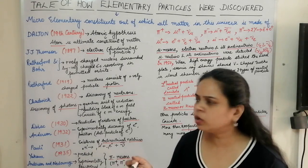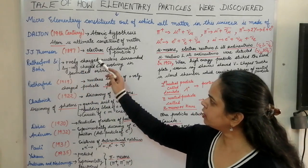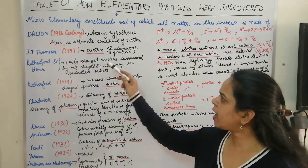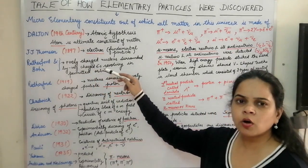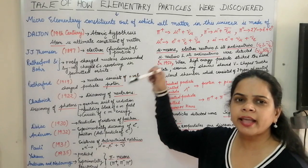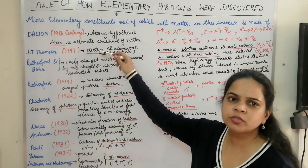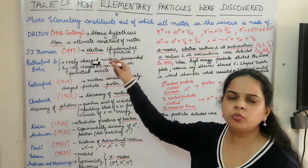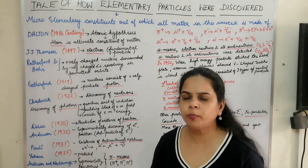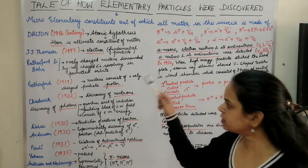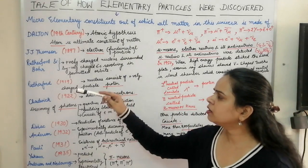Subsequently, Rutherford and Bohr gave the circulation of electrons in specified orbits around the nucleus. They stated that the nucleus is positively charged and is surrounded by negatively charged electrons — not like seeds in the watermelon as proposed by JJ Thomson, but revolving around the nucleus in definite, permitted orbits.